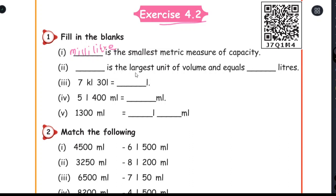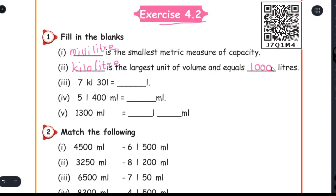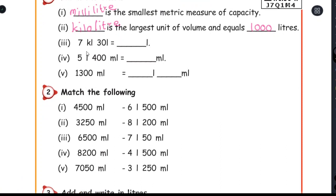Dash is the largest unit of volume and equals dash liters. The largest unit is kiloliter, spelled K-I-L-O-L-I-T-R-E. Kiloliter equals thousand liters.